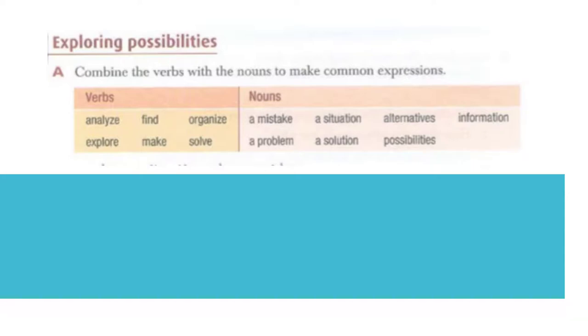Nouns: A mistake. A situation. Alternatives. Information. A problem. A solution. Possibilities.